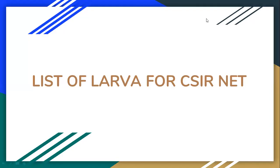In every year during a CSIR NET exam, one or two questions come from invertebrate larva. Today we'll talk about the list of larvae that's important for CSIR NET syllabus. We'll cover different types of invertebrate larvae. In zoology, invertebrates include porifera, cnidaria, ctenophora, platyhelminthes, nematoda, annelida, arthropoda, mollusca, echinodermata, and some lower chordates.